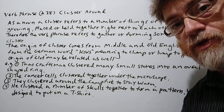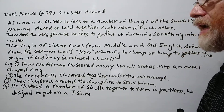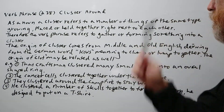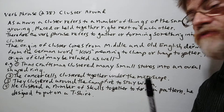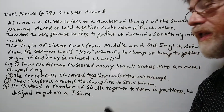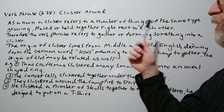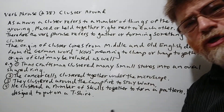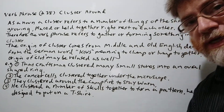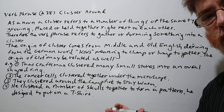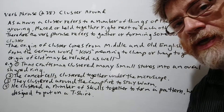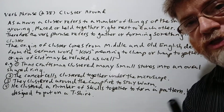Let's look at the note here. As a noun, a cluster refers to a number of things of the same type growing, placed, or held together right next to each other. So they could be naturally growing together, moving together, or placed or put together by someone. Then we could say it's a cluster.